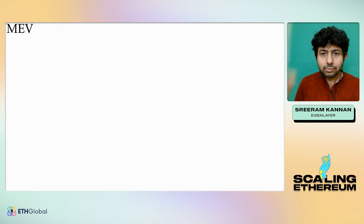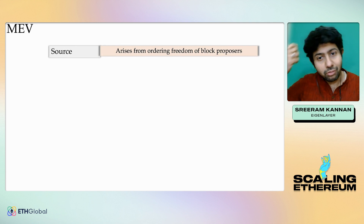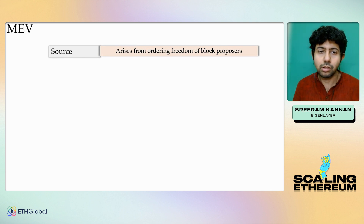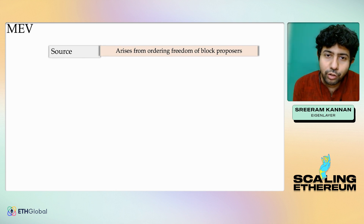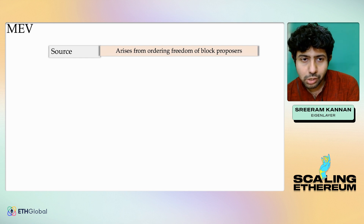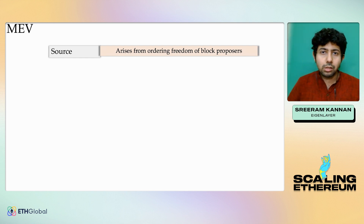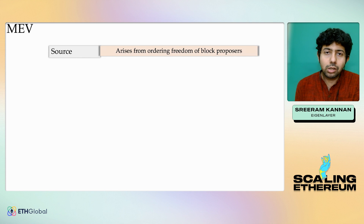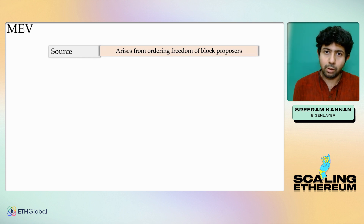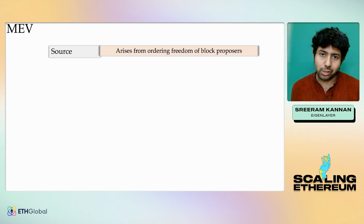So what is MEV? One way to define MEV — and there are many different generalizations of this — is that it arises from the freedom of block proposers to order transactions. In Ethereum, the consensus protocol constrains various actions of block proposers, but there is still a remarkable amount of freedom when it comes to transaction ordering.